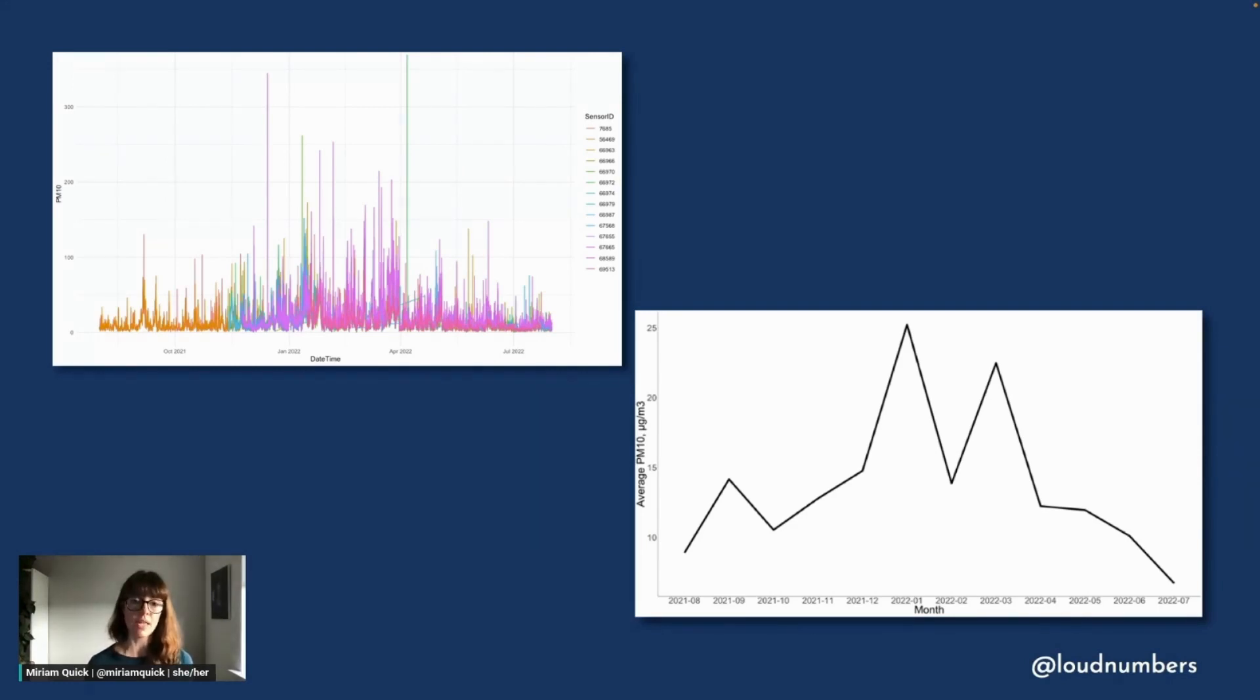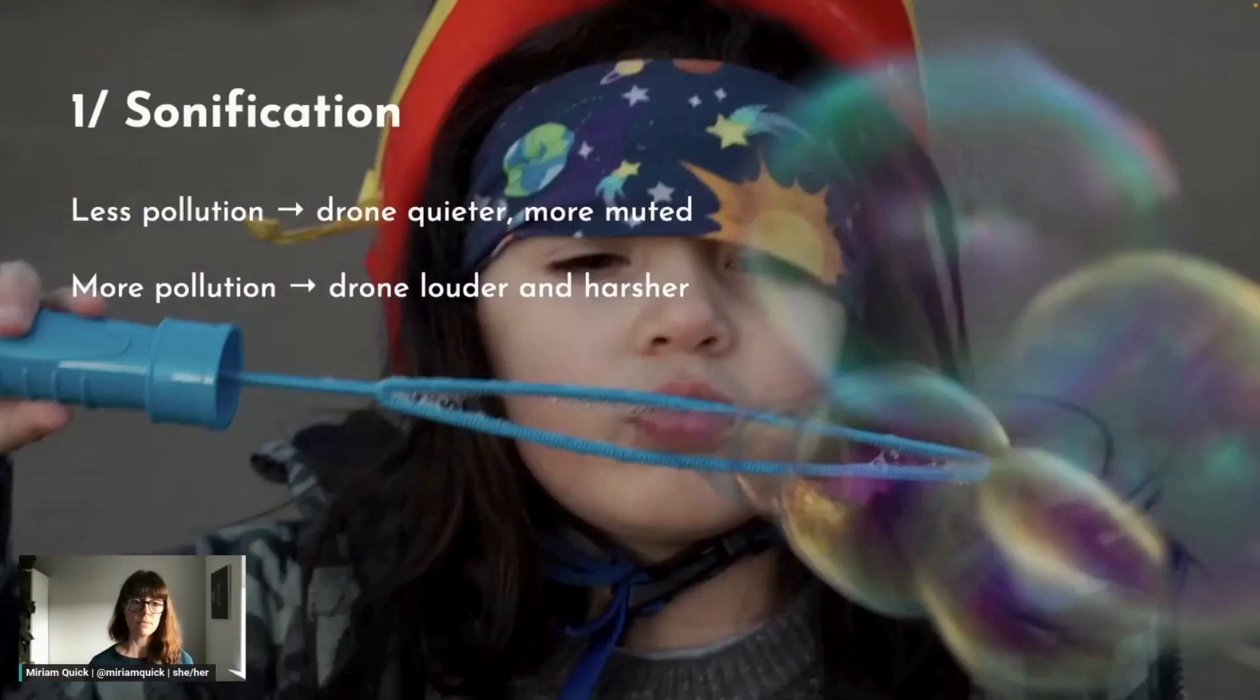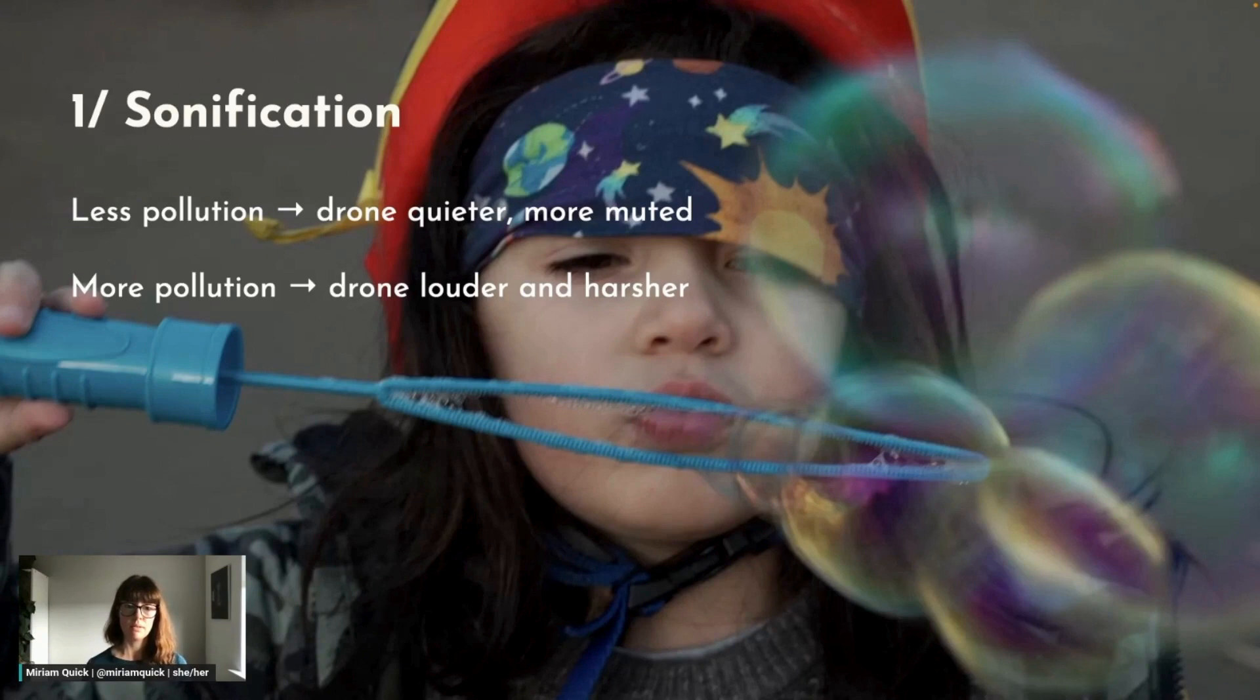There are actually three different layers of sound in this artwork and they all play over each other at the same time. So the first layer is the sonification itself. This represents the monthly average particulate levels over the course of a year, those 12 numbers. It's a drone sound and it gets louder and harsher when the particulate levels were higher. So here's what it sounds like in the summer when levels were low. This is very quiet, so hardly anything there, just a very low rumble. And this is what it sounds like in the winter when particulate levels were high. So a lot louder and it's also a really kind of scary and ugly sound.